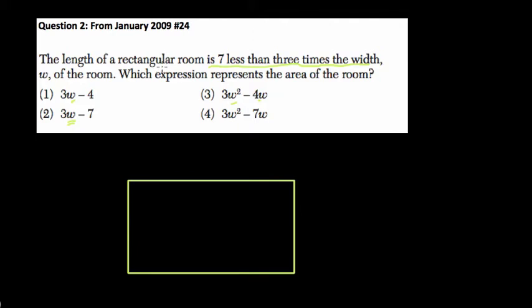Length is being defined in terms of width, right? They don't tell you what the length is. They say, well, whatever the width is, the length is 7 less than 3 times that. Now, so what I'm going to do is I'm going to label that here. I'll label this dimension as my width.